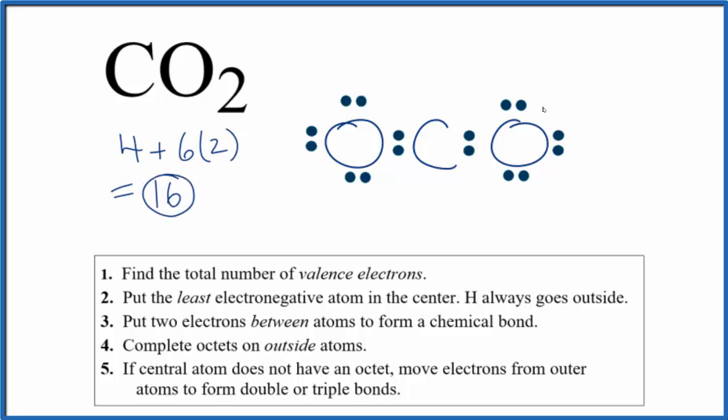The oxygens have octets, but that carbon in the center does not. What we can do is if the central atom does not have an octet, we can move electrons from these outer atoms to the center to obtain that octet.